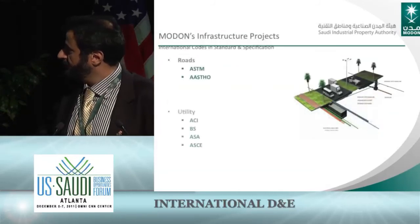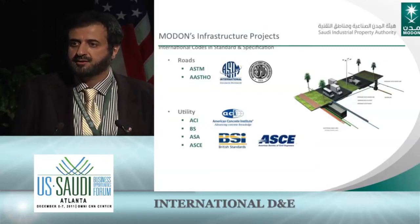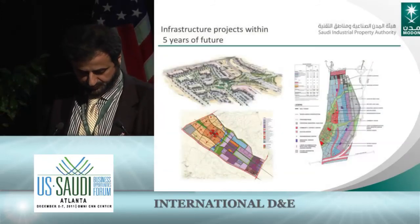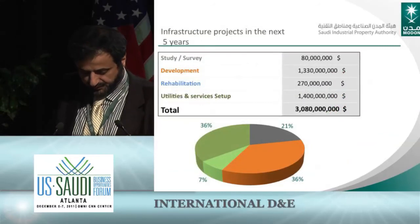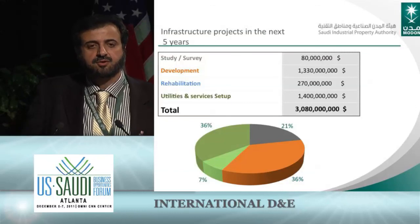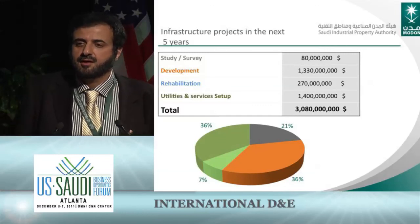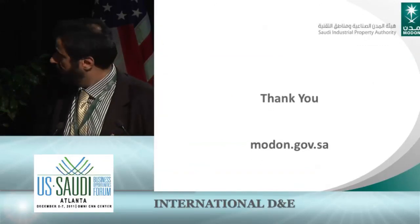We always try to use proper international standards in our infrastructure to ensure sustainability and the right quality for our tenants. We are going to invest more than 3 billion US dollars in the next four years on building the right infrastructure — these are direct investments by us. We also have BOT projects with the private sector to develop services in the water field, and we are building housing for our tenants, which will be around another 2 billion US dollars. Thank you very much.